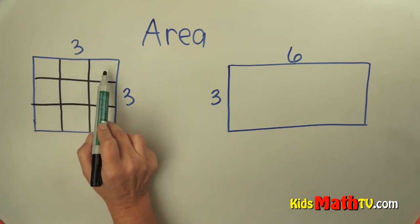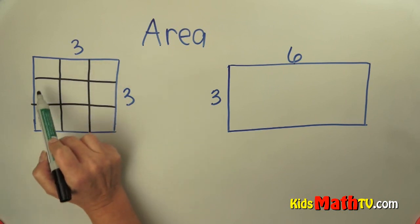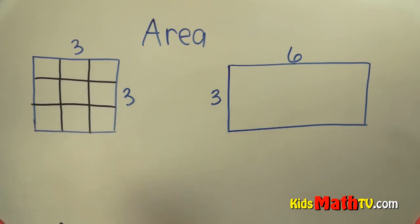And if I count them, one, two, three, four, five, six, seven, eight, nine. There are nine squares, or nine square units within that.